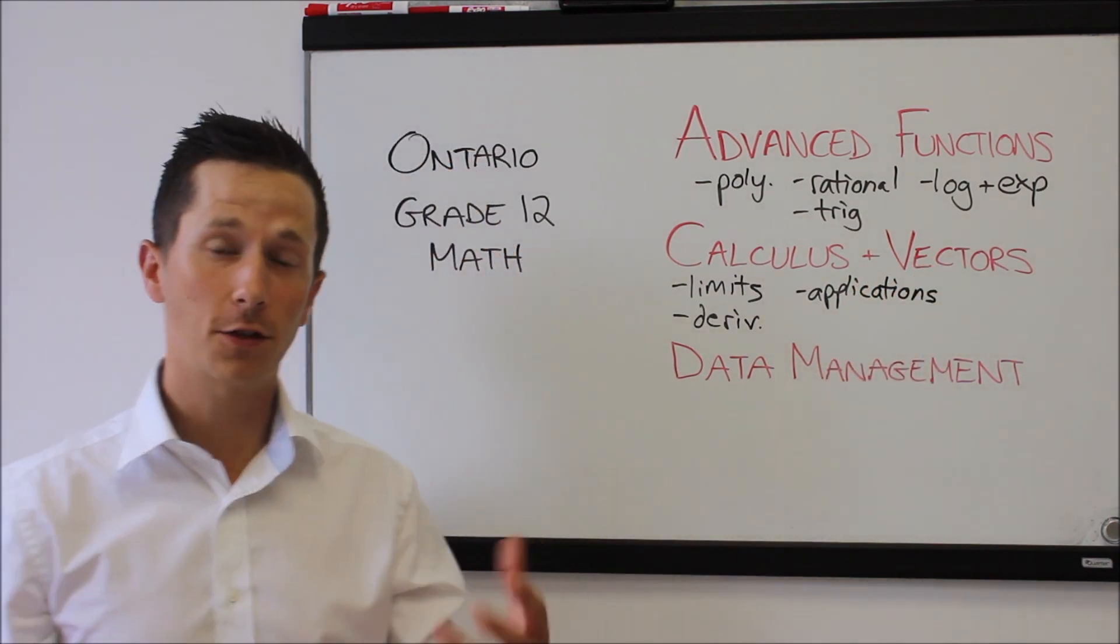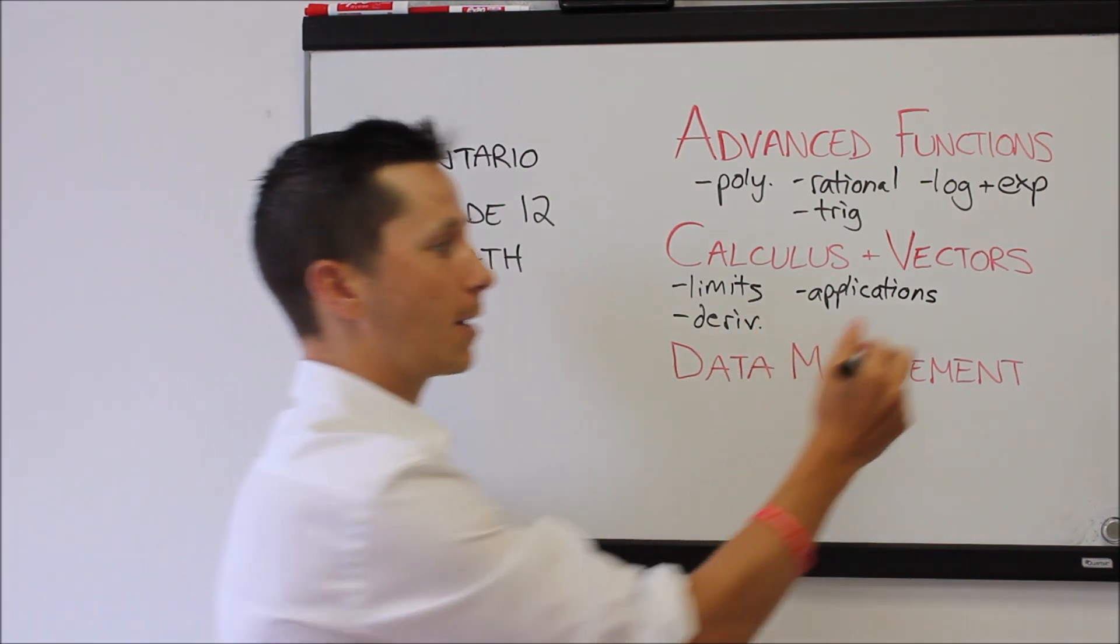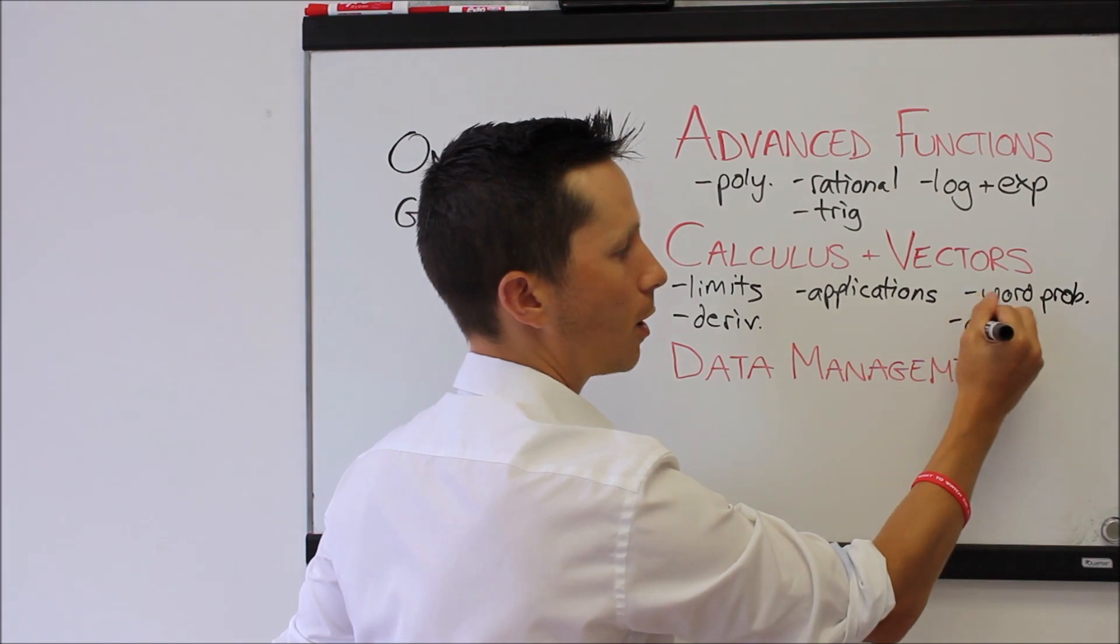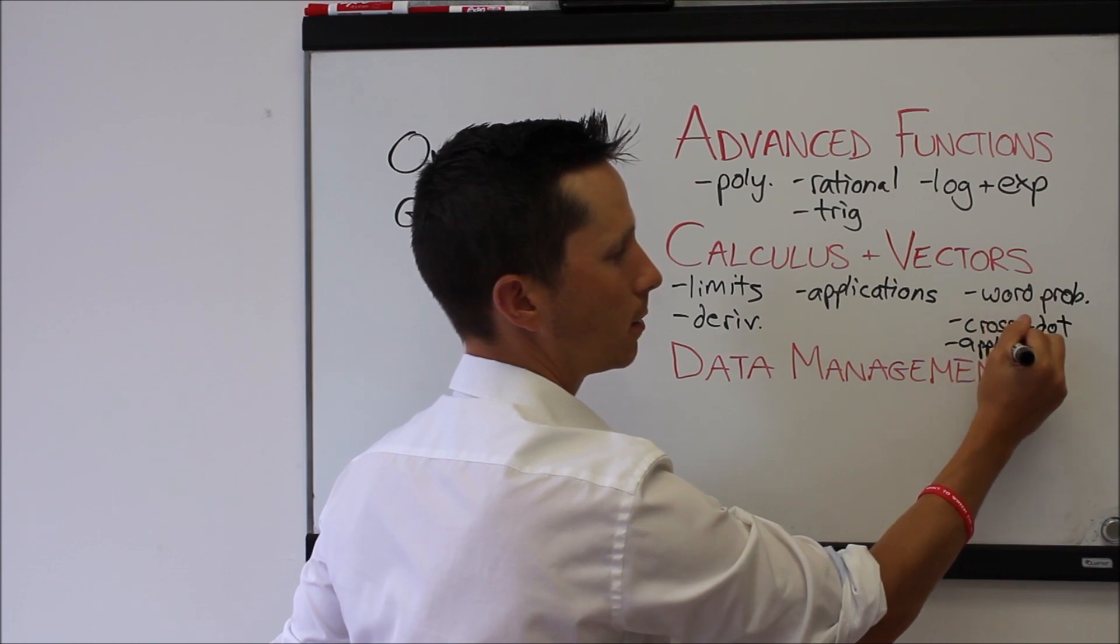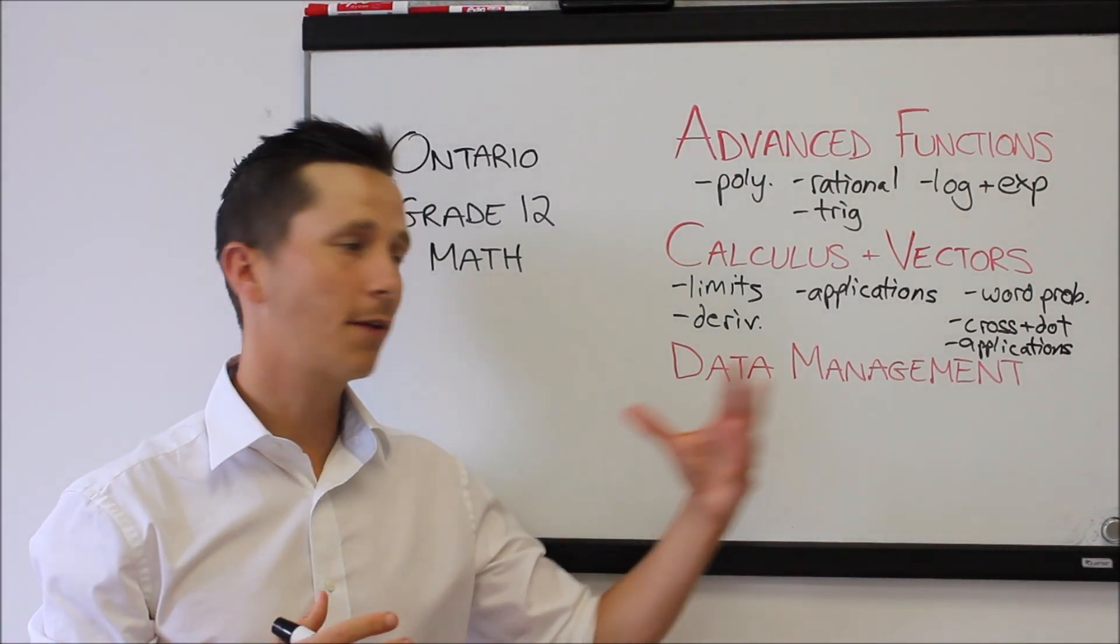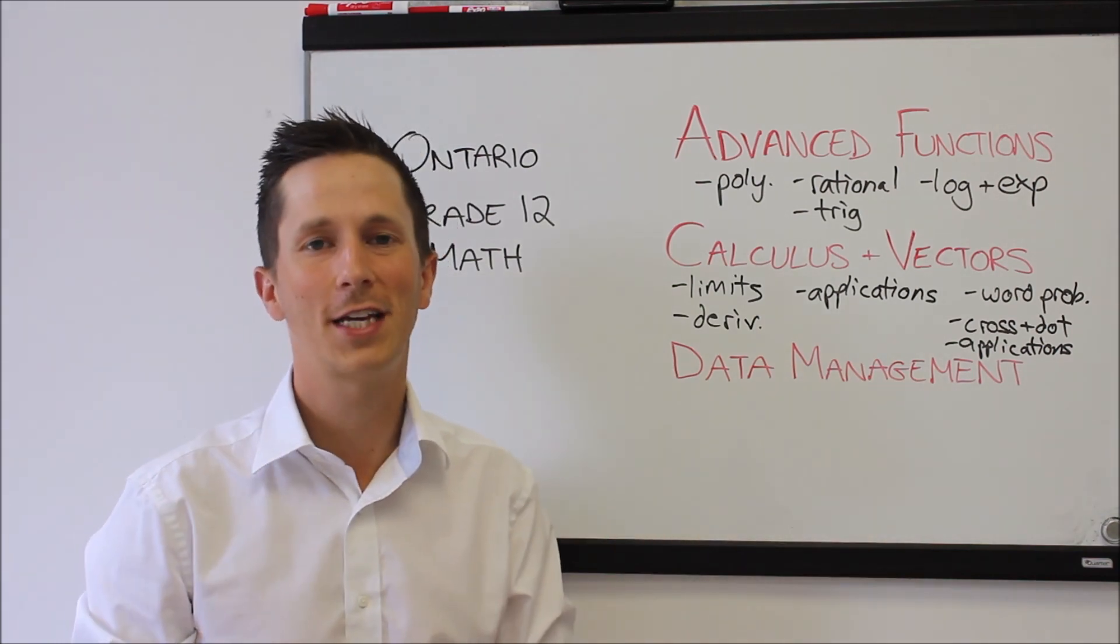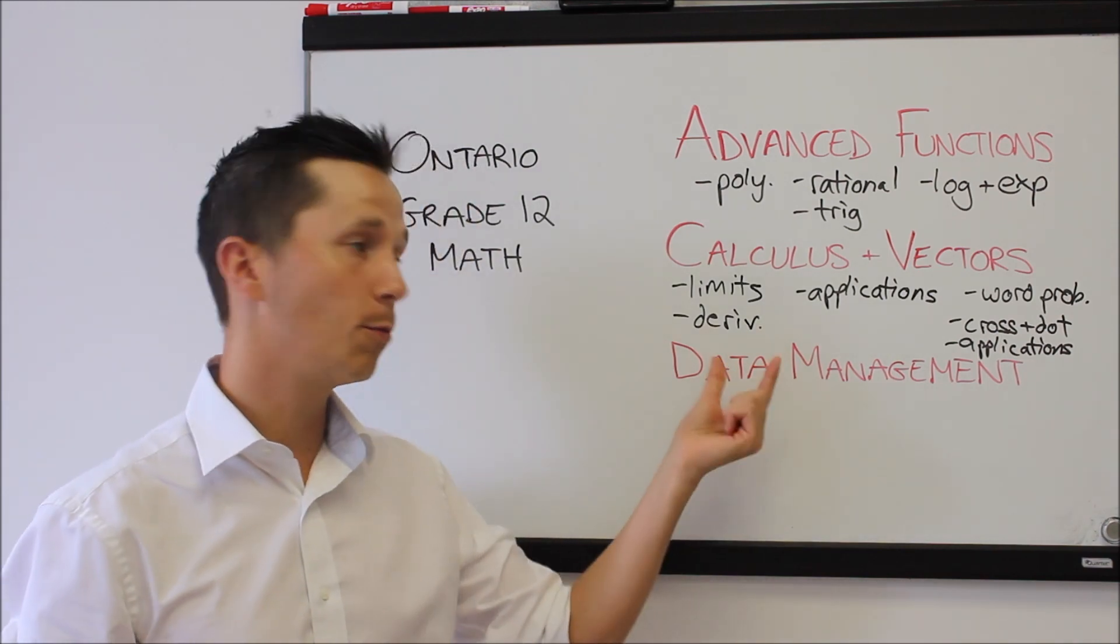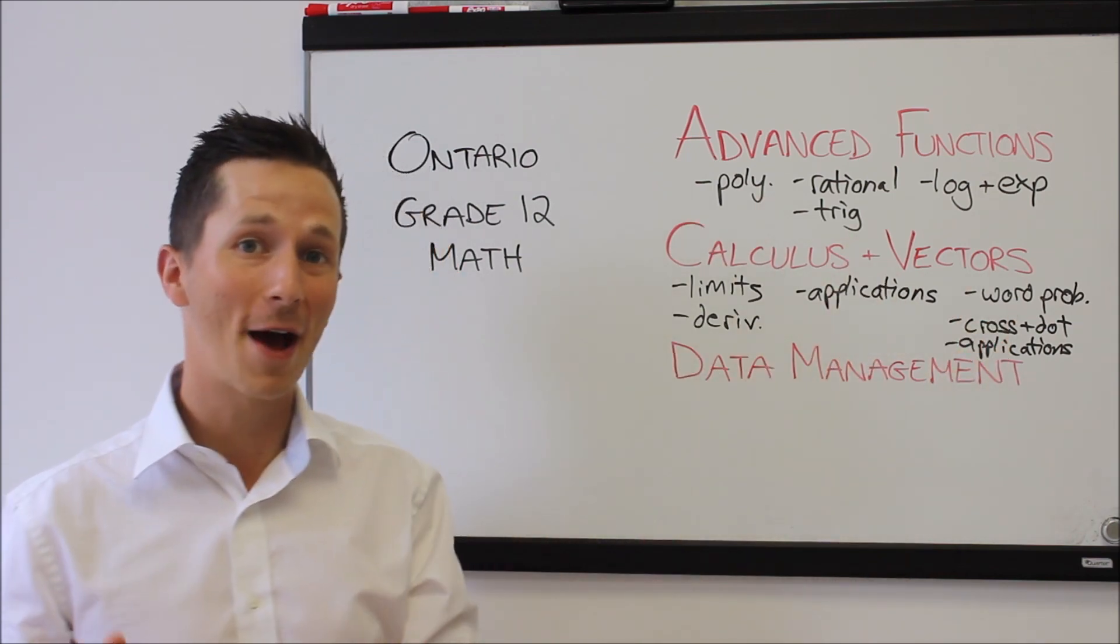And then you're going to move on to vectors, which is a smaller part of the course. Calculus is definitely the main part and the most applicable going forward in university. But vectors, you're going to do things like word problems, cross and dot product, and applications. The concept of vectors is actually quite simple, but some of the word problems can get a little bit more complex. So people do often have difficulty with vectors, even though many people call it sort of the easy type. Calculus, again, is your most important going forward into university, where you'll not only do more advanced derivatives, but you'll move into integral calculus, and potentially even beyond that if you're looking at more of a math or science major.